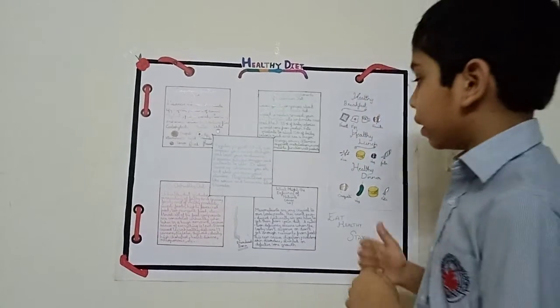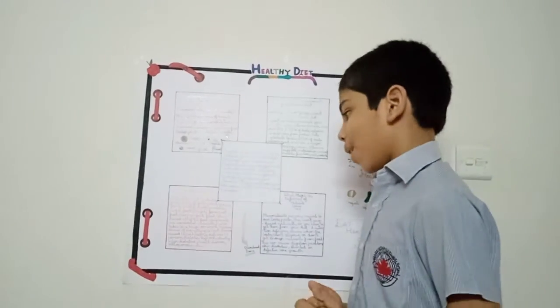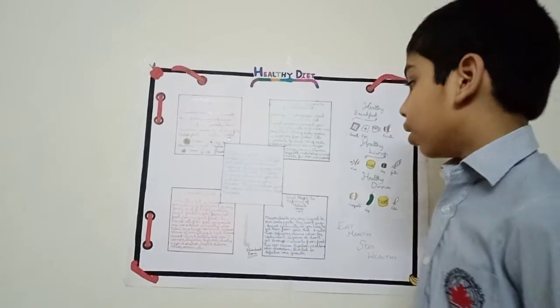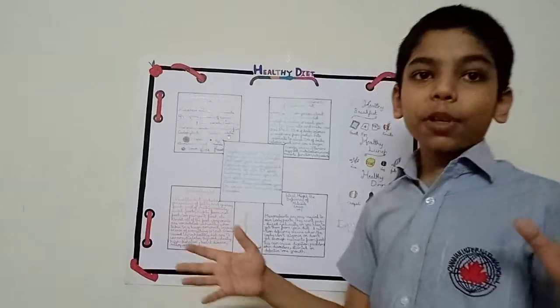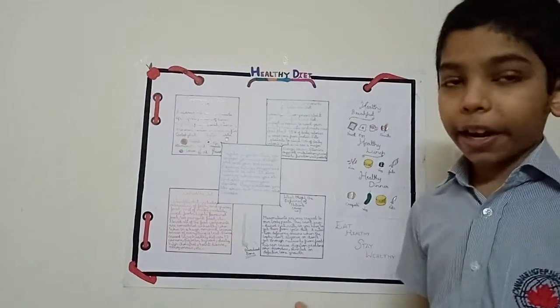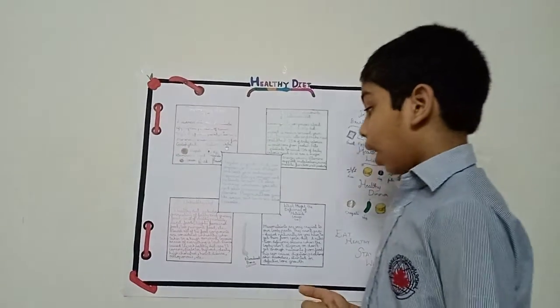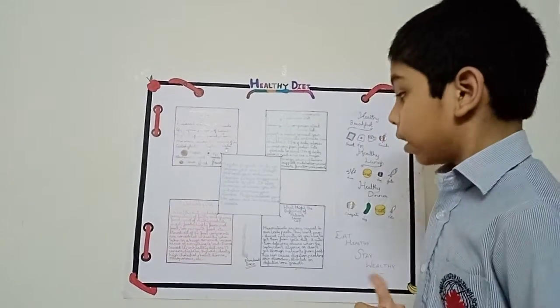If you actually eat unhealthy diet, then many issues can happen. Like you have 13 types of cancers can happen, then diabetes, then thyroid, then obesity of course, then high cholesterol level.